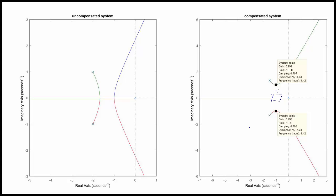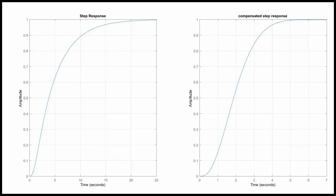We were indeed able to design a compensator to place the poles at the desired locations. Here's the step response. Notice that we had a type 1 system before and after compensation, so we don't see any difference in the steady state error. However, by shifting the root locus more to the left, we do see a change in settling time. The original settling time was about 20 seconds and the new settling time is somewhere around 5 seconds.